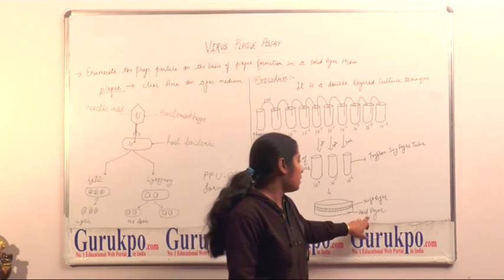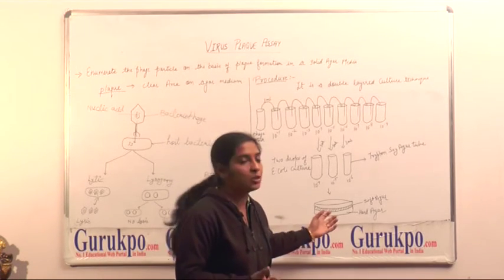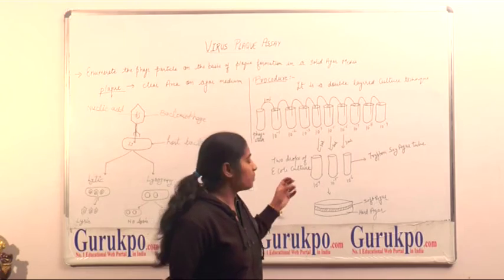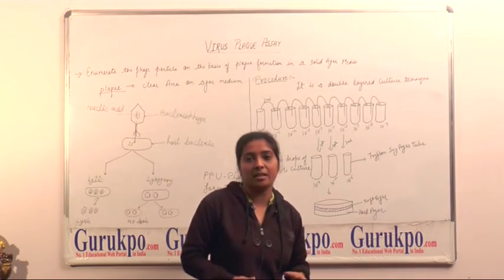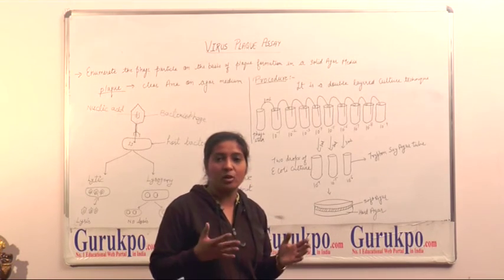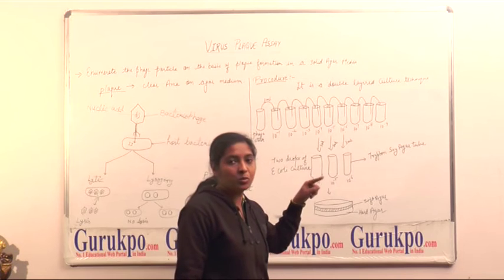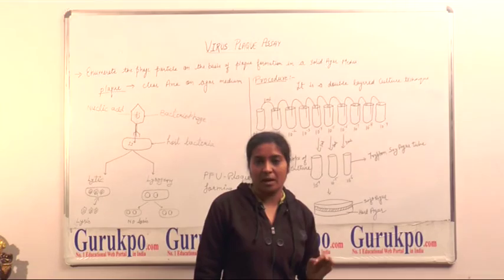Then, E. coli bacteria will grow on the hard agar media and get nutrition from the hard agar media. And after that, the bacteriophage that is susceptible for the bacterial cell will infect the bacterial cell and cause the lytic cycle, and make a clear zone around on the hard agar media. And this clear zone is known as a plaque.